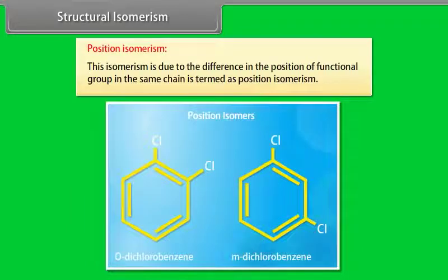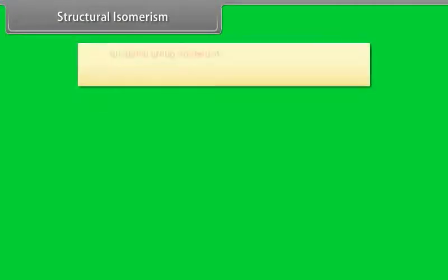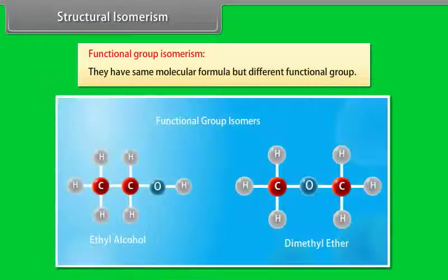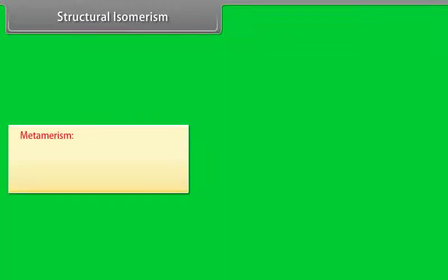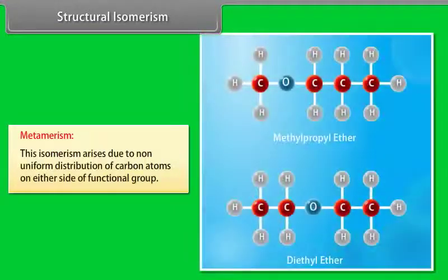Position-isomerism is due to the difference in the position of a functional group in the same chain. Functional group isomerism — these compounds have same molecular formula but different functional groups.